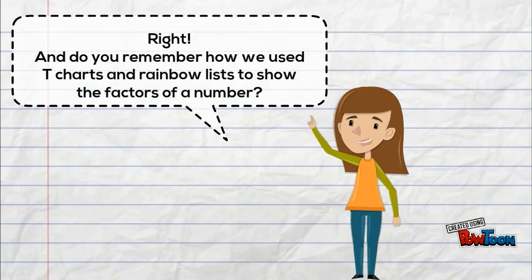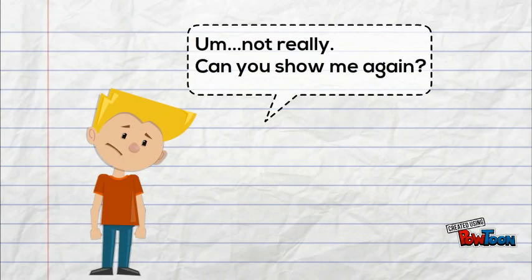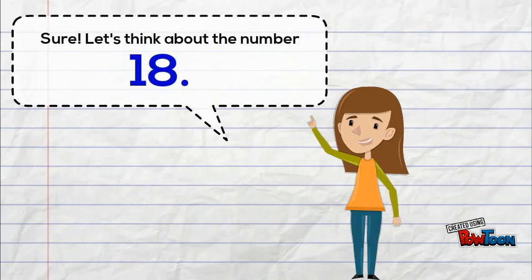Right, and do you remember how we used t-charts and rainbow lists to show the factors of a number? Hmm, not really. Can you show me again? Sure. Let's think about the number 18.